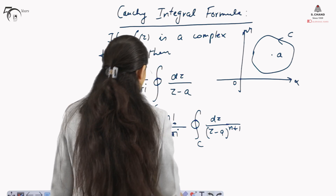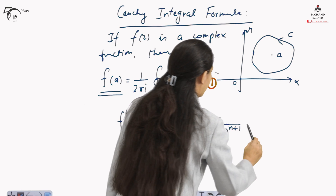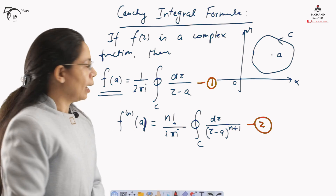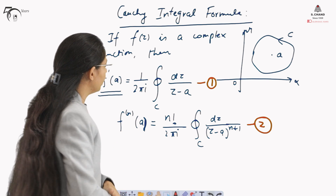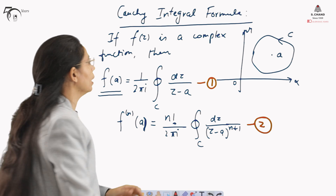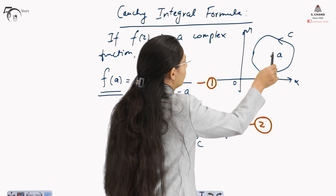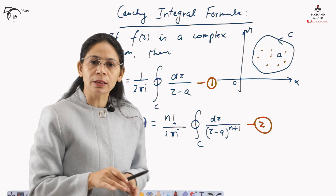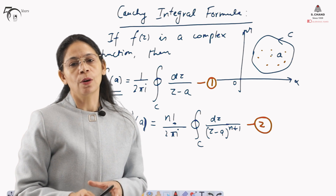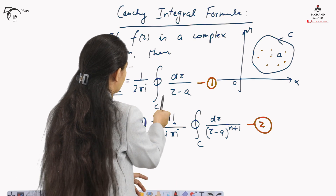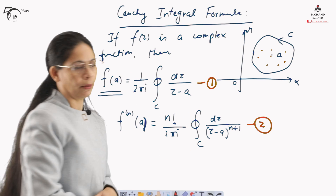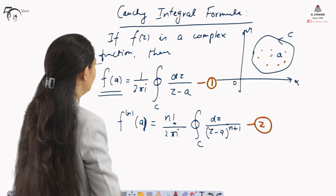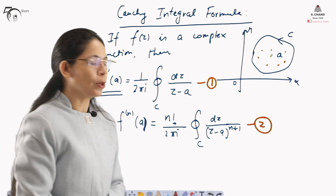These two together are named Cauchy's Integral Formula. The advantage is that for whatever point is given inside the curve C, we can find out the value of the function using this integration, which has already been discussed in previous videos. We will take one example to make things more clear.